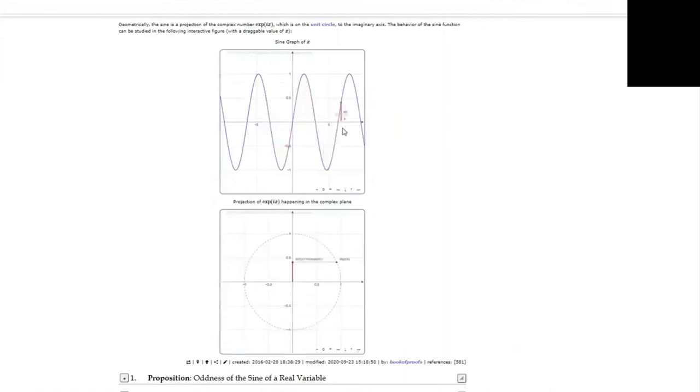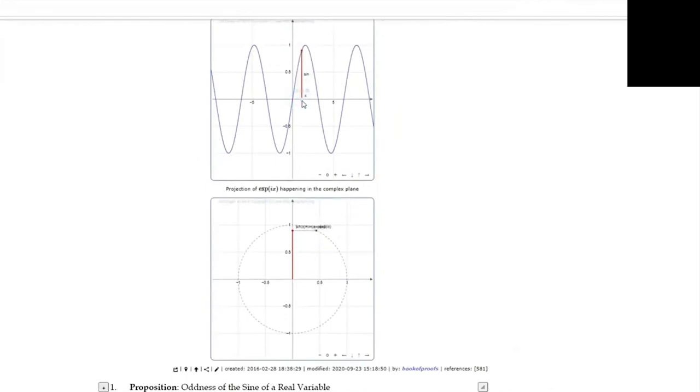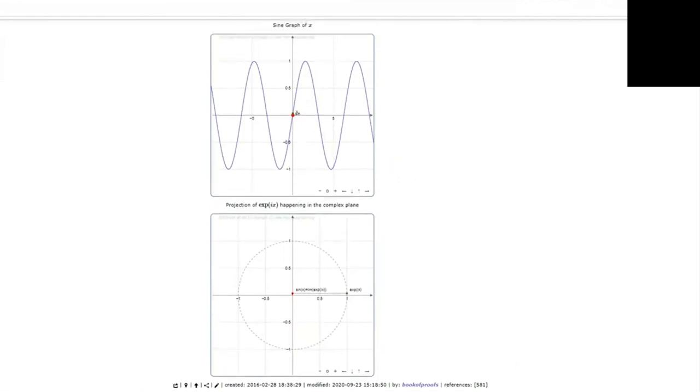As you can see, I can now move the value of x and observe how the real sine function and the complex function change simultaneously and why the real sine can be defined as the imaginary part of the complex exponential function. Of course, similar analogy can be drawn between the complex exponential function and the real cosine function. But I won't show you the cosine JSXGraph example today.